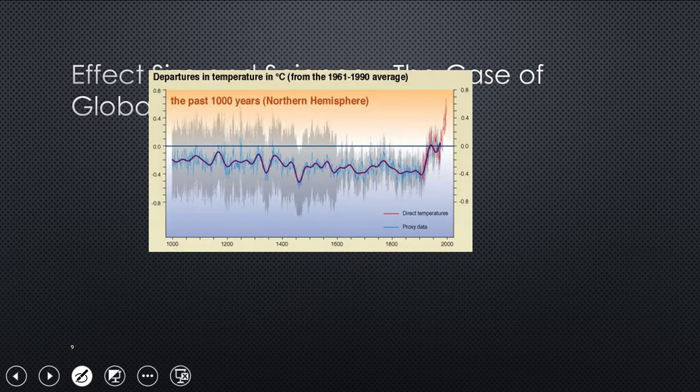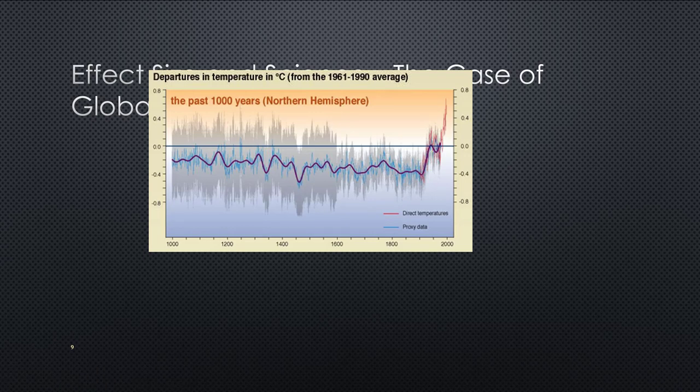So here's the so-called hockey stick, which shows that upward trajectory of this temperature curve. Look at all this data over a whole millennium worth of data. And look, this has all been put on the same scale, I forget where is it, zero? So zero is around 1900 in the scale.